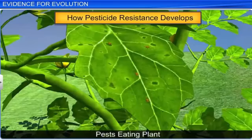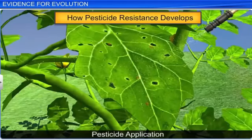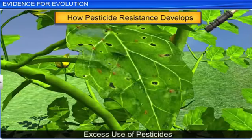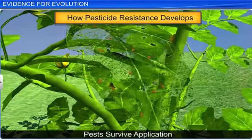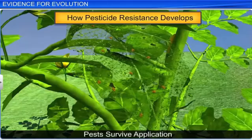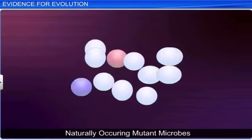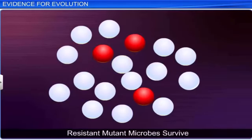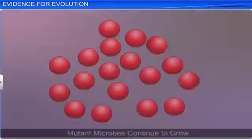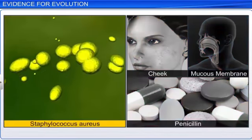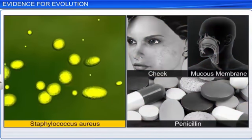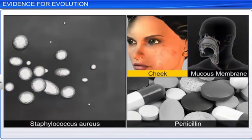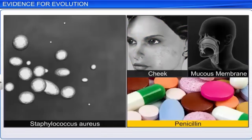Evolution is also impacted by processes and materials derived from human activities. For example, excessive use of pesticides results in a selection of resistant varieties within a small period of time. Similarly, resistant microbes also emerge when we use antibiotics and drugs. For example, Staphylococcus aureus is a resistant pathogen. Found on the mucous membranes and the human skin in around one-third of the population, it is extremely adaptable to the antibiotic penicillin.